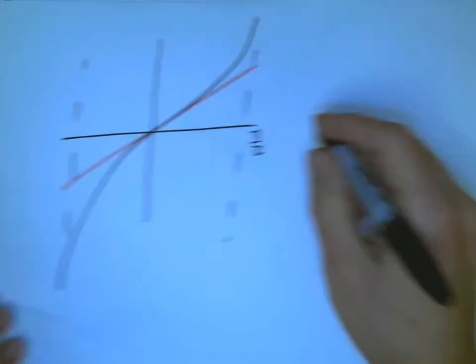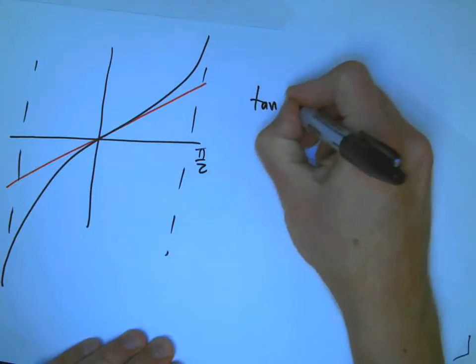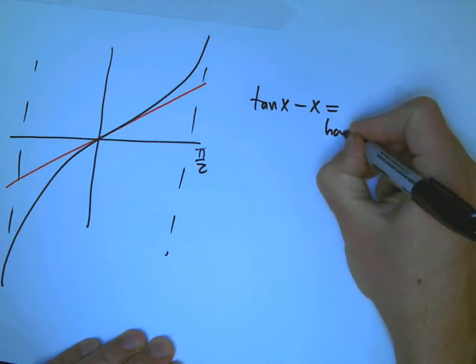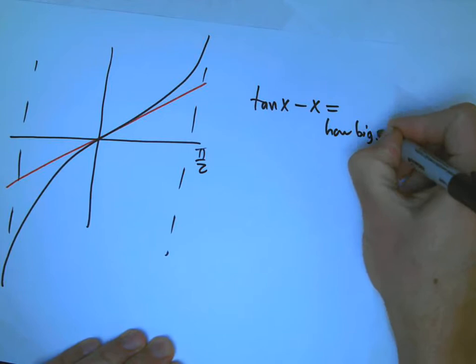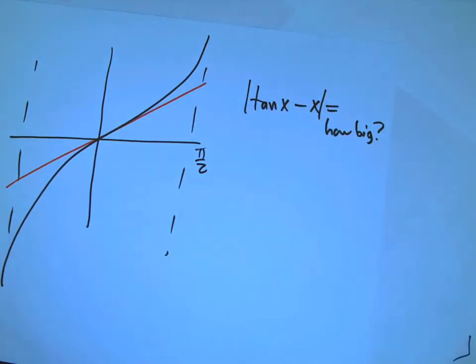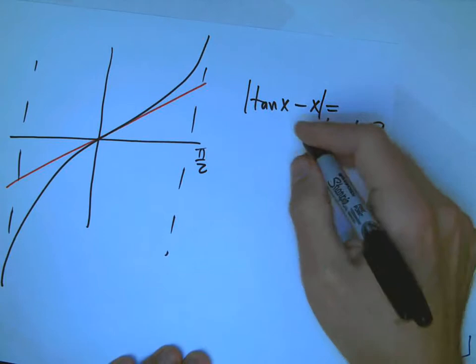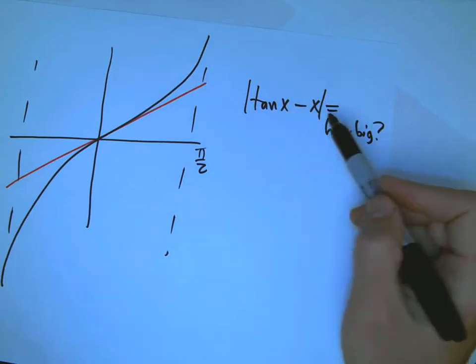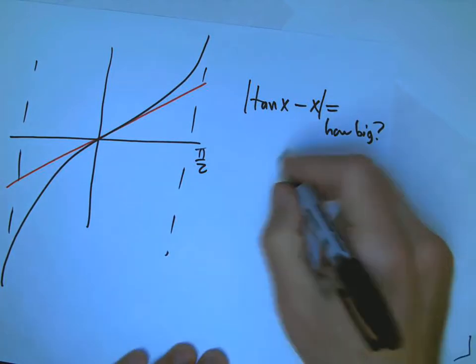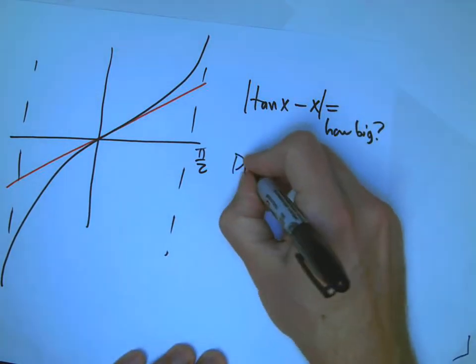So, let's pick, start out, let's pick an error bound of 0.5. I think that's what I'm going to use to start with. And so, that means I'm going to allow tan x minus x to be up to and including 0.5 in size. So, I want to know where that's satisfied.